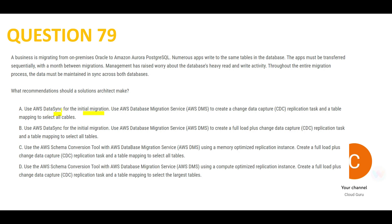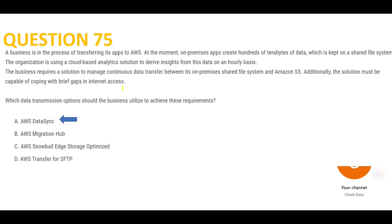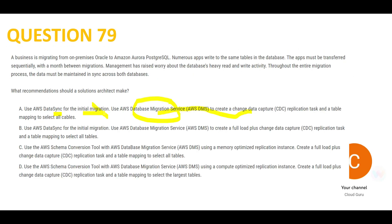Option A says to use DataSync for the one-time initial migration and DMS for change data capture — that's reversed. You should use DMS for the one-time move, like movers and packers built for that purpose. DataSync is always for incremental ongoing transfer. We covered this in question 75 where we used DataSync for a continuous, ongoing solution. So A is wrong.